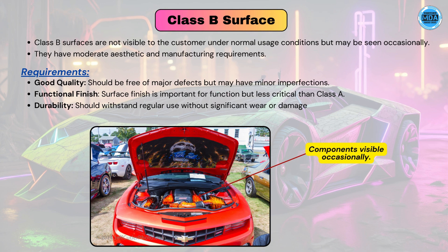Class B surfaces are not visible to the customer under normal conditions but can be seen occasionally. They have moderate aesthetic and manufacturing requirements compared to Class A surfaces. Good quality, good surface finish, and good durability are needed, but compared to Class A, the requirements are less. Some minor defects are allowed if they are not affecting performance.